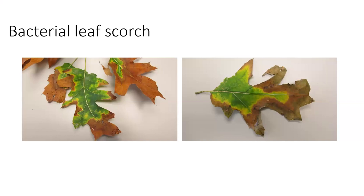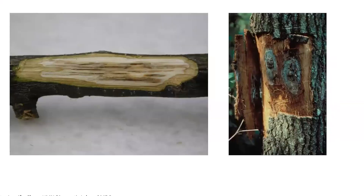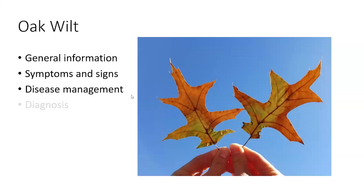Now, back to oak wilt diagnosis. If you have early dieback or early leaf drop, you can take some branches from the tree, chop off the bark, and look at the underside of the bark to see whether there is brown and black streaking — that's one indication of this disease. Of course, you will need to see the fungus to confirm it. This photo shows fungal mats underneath the bark — that is definitely a strong positive for this disease.